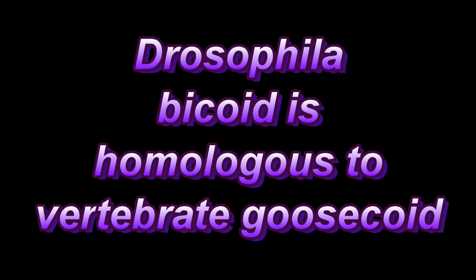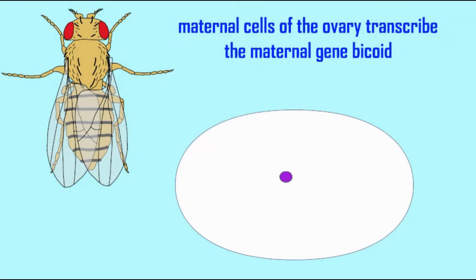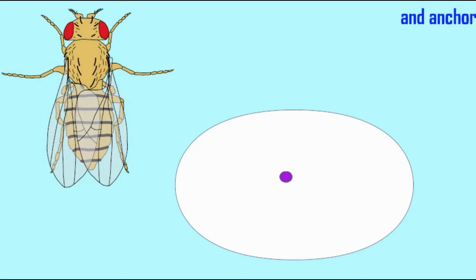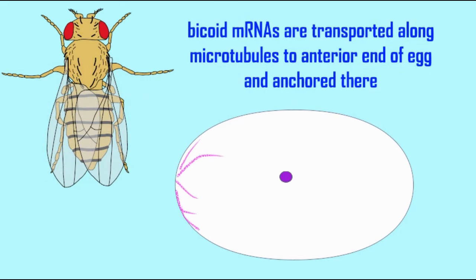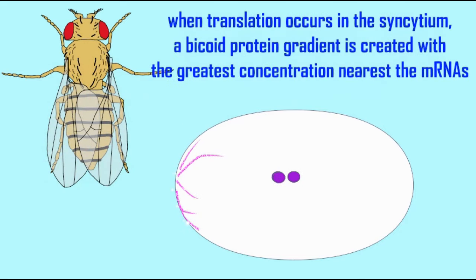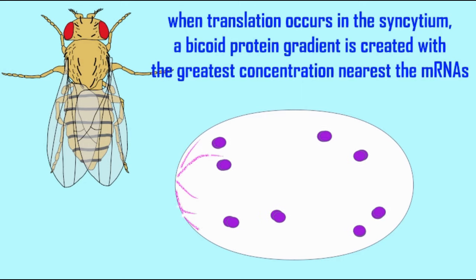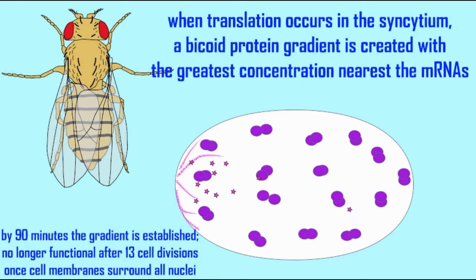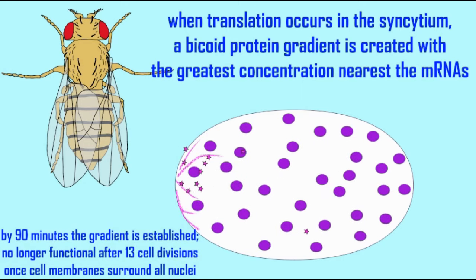While at some level it is interesting that the gene bicoid is the signal to develop anterior structures such as the head in Drosophila larvae, who cares? Drosophila is just one organism out of millions. So why should one care about this particular system?